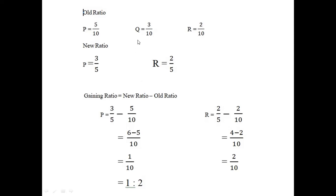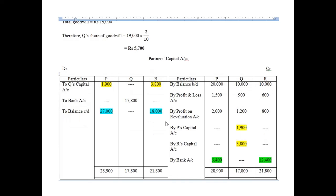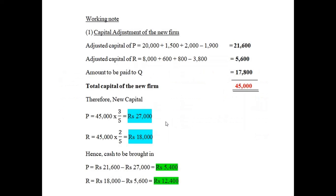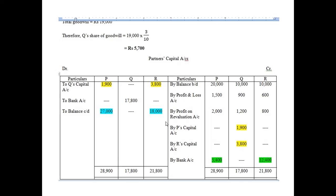We are on question number 41, which is a new question type — the capital adjustment. By now you know how to calculate the new ratio and gaining ratio. You need to read the questions carefully. Our main concern area is the partners' capital account, and we will also discuss a few things related to the balance sheet.